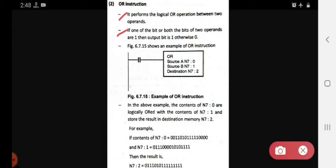then output bit is 1, otherwise it is 0. Means 1 bit or 2 bits are 1, then your output will be 1, otherwise it will be 0. You already know OR instruction. So what is your example of OR instruction?